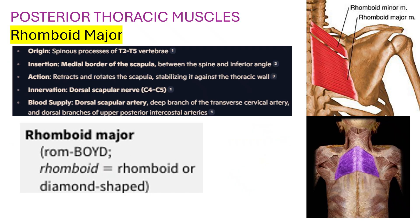Rhomboid major: origin is the spinous processes of T2–T5 vertebrae. Insertion is the medial border of the scapula between the spine and the inferior angle. Action: retracts and rotates the scapula, stabilizing it against the thoracic wall. Innervation: dorsal scapular nerve, C4–C5. Blood supply: dorsal scapular artery, deep branch of the transverse cervical artery, and dorsal branches of upper posterior intercostal arteries.